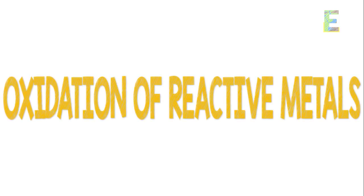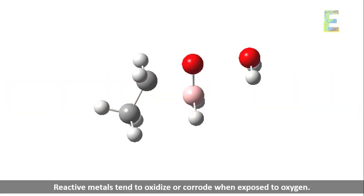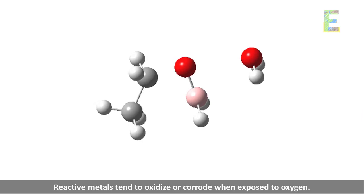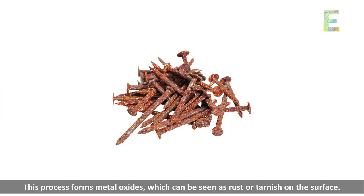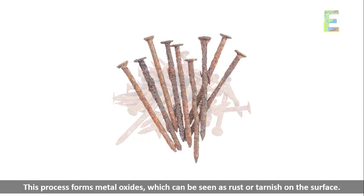Oxidation of reactive metals. Reactive metals tend to oxidize or corrode when exposed to oxygen. This process forms metal oxides, which can be seen as rust or tarnish on the surface.